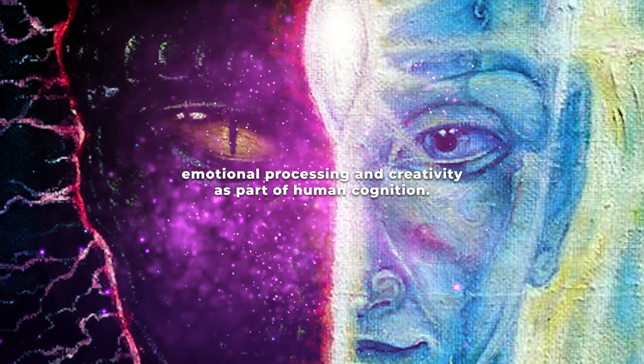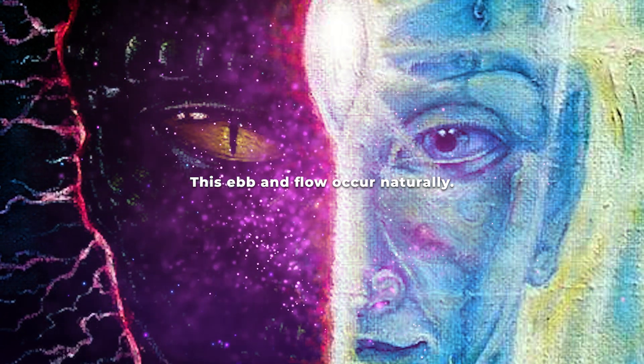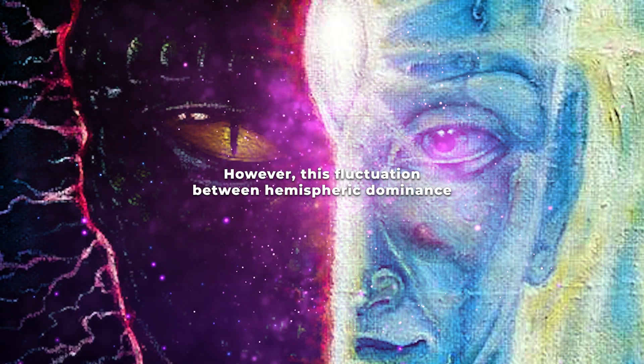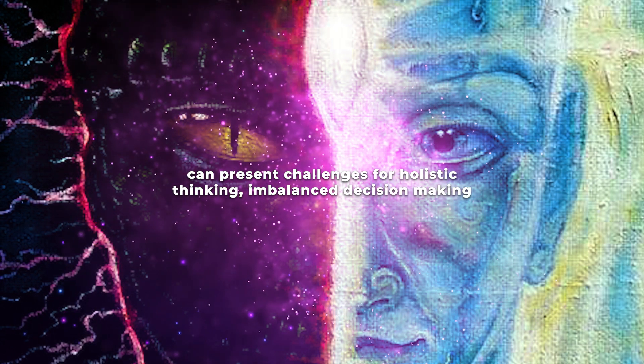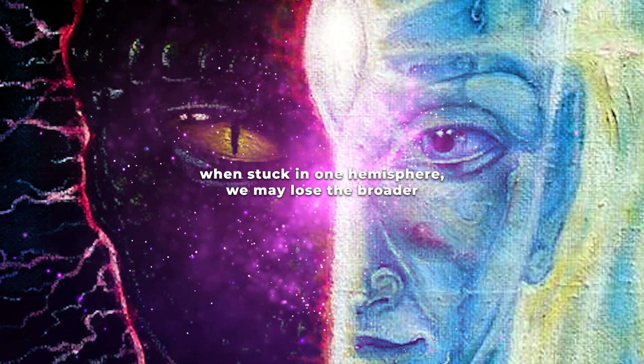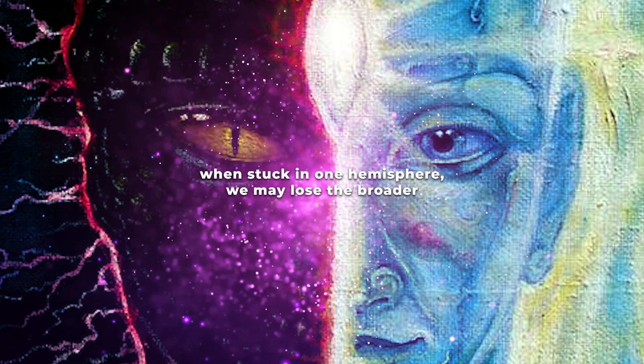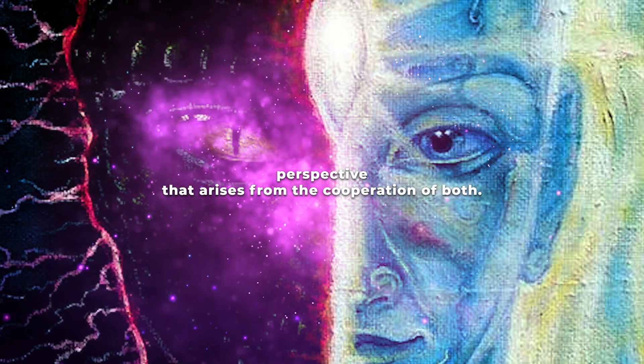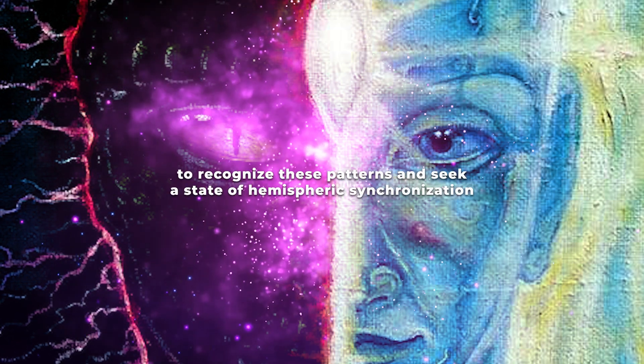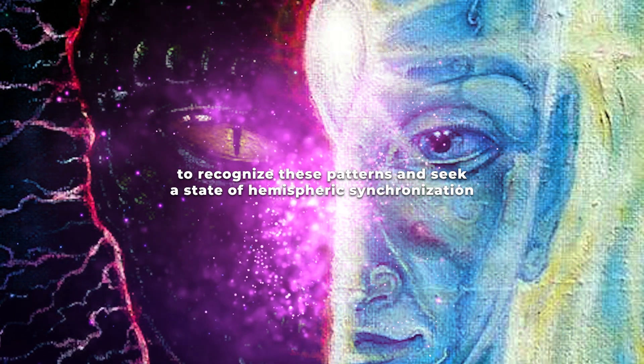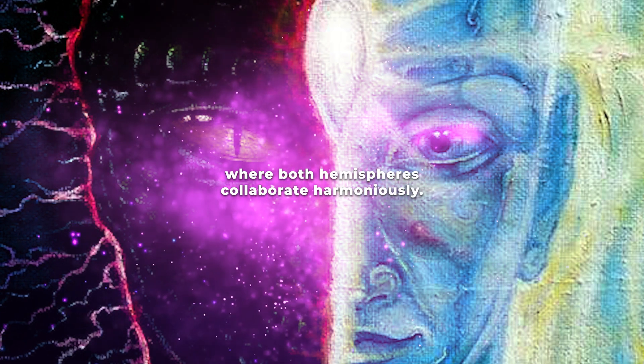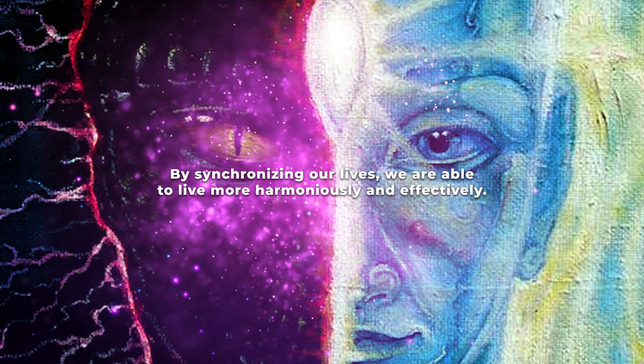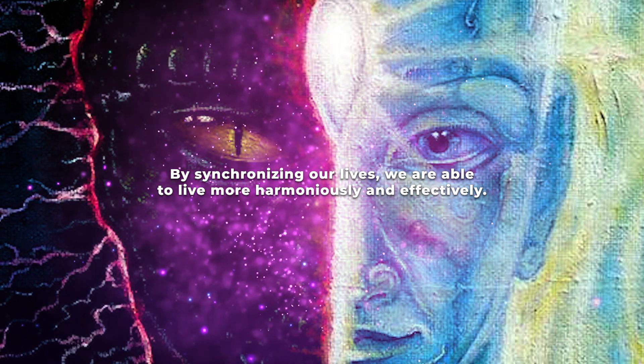As part of human cognition, this ebb and flow occur naturally. However, this fluctuation between hemispheric dominance can present challenges for holistic thinking and balanced decision-making. When stuck in one hemisphere, we may lose the broader perspective that arises from the cooperation of both. It is essential to recognize these patterns and seek a state of hemispheric synchronization, where both hemispheres collaborate harmoniously. By synchronizing our lives, we are able to live more harmoniously and effectively.